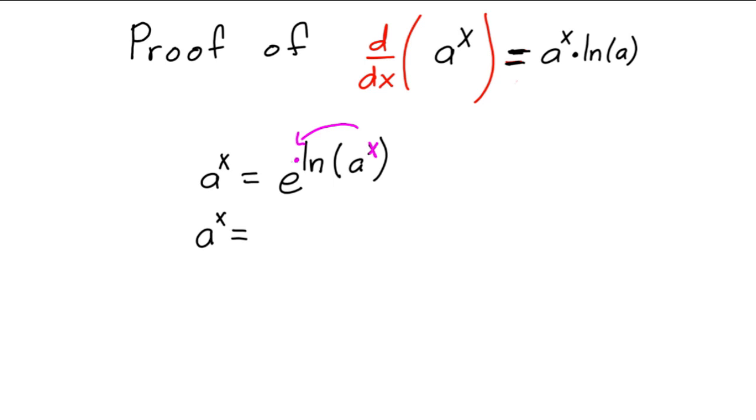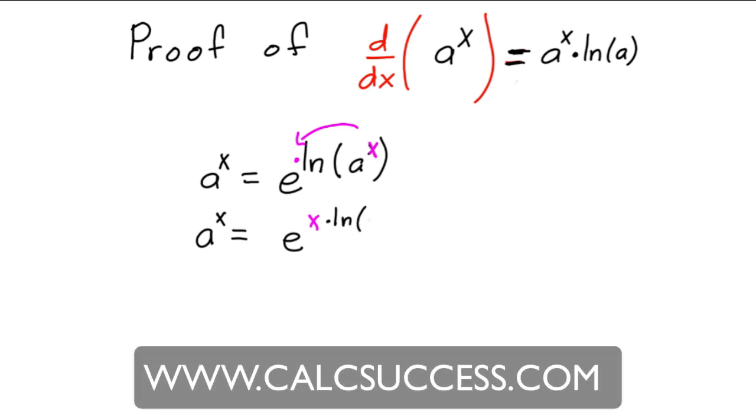So you can get that a to the X is equal to e raised to the X times natural log of a. Okay, now if you get the derivative of both sides, derivative of the left side, the derivative of the right side...